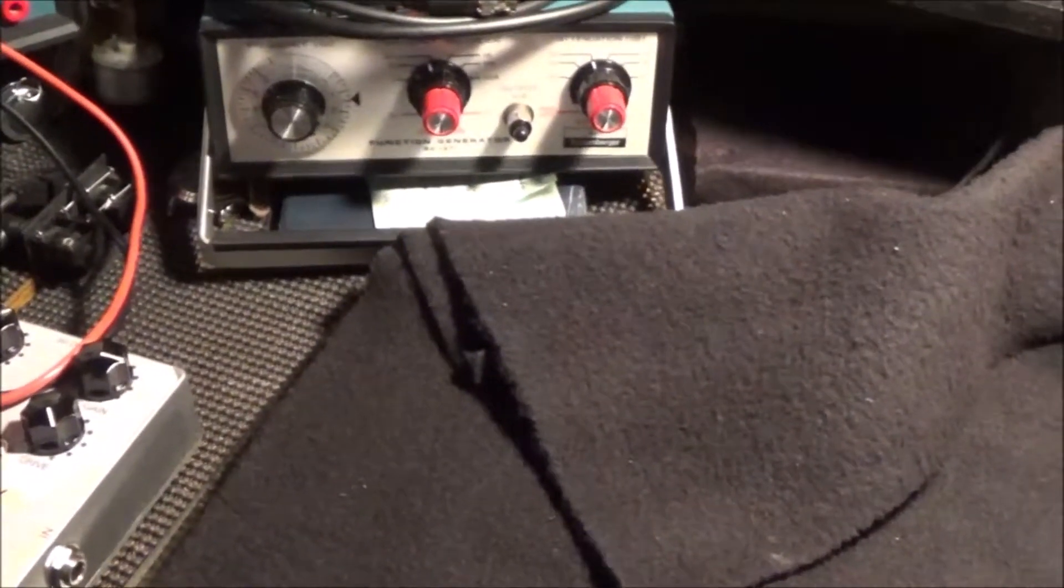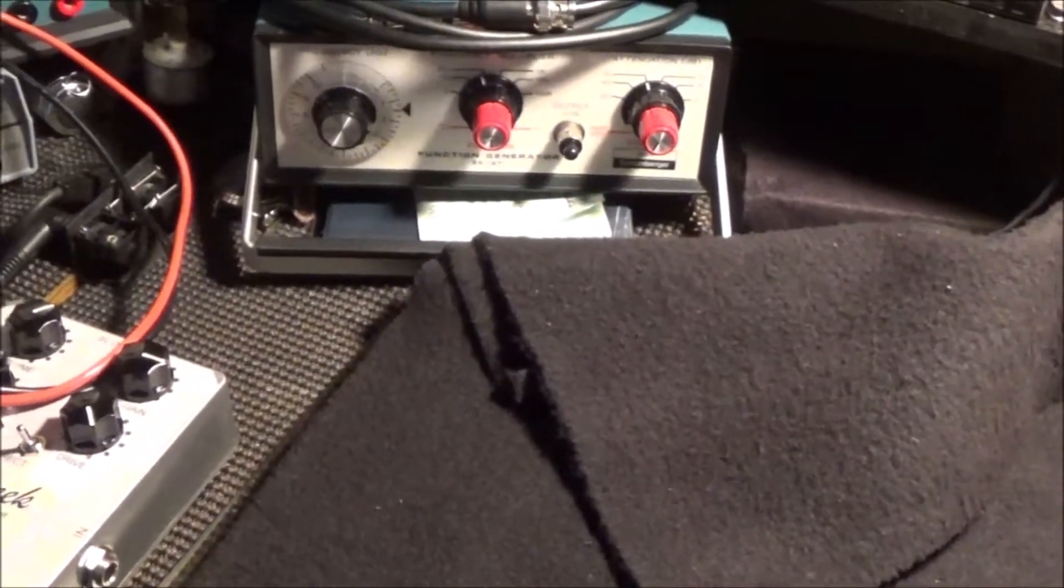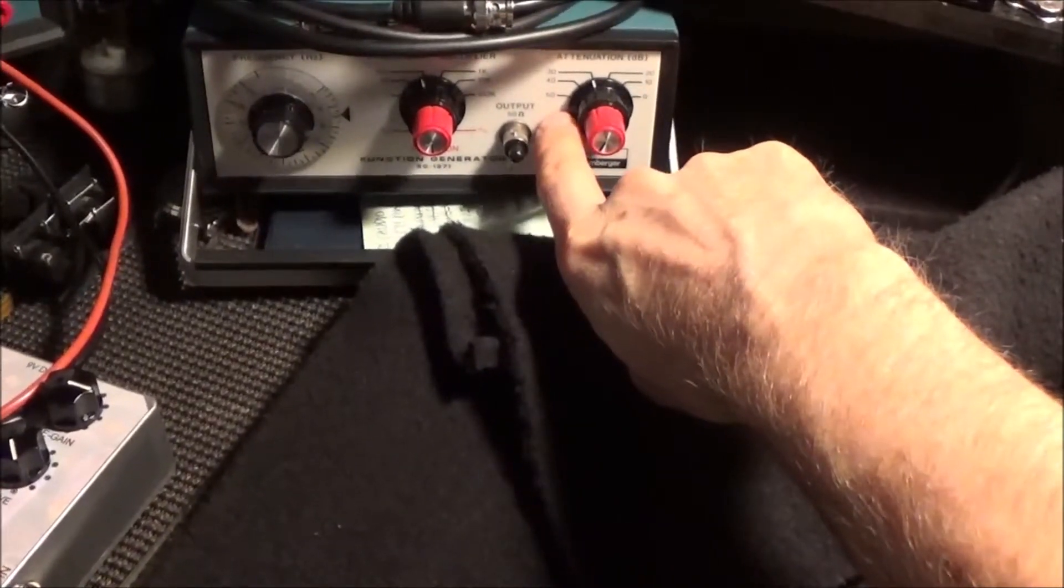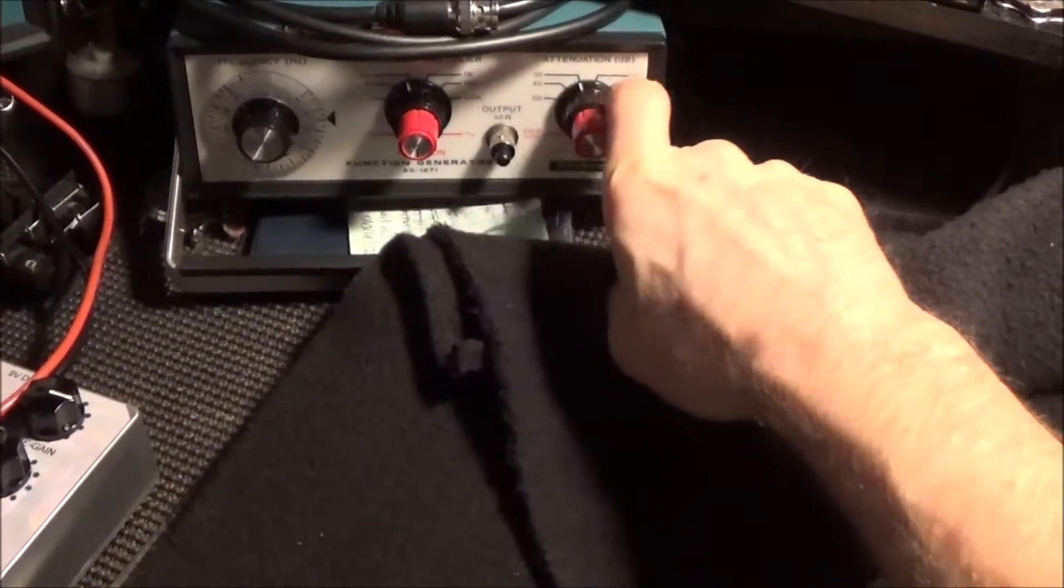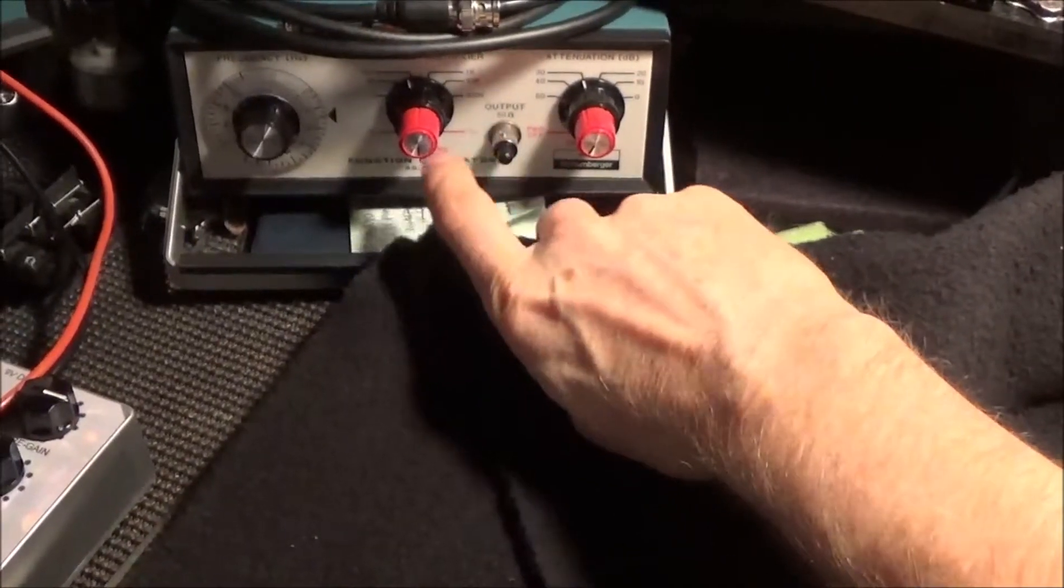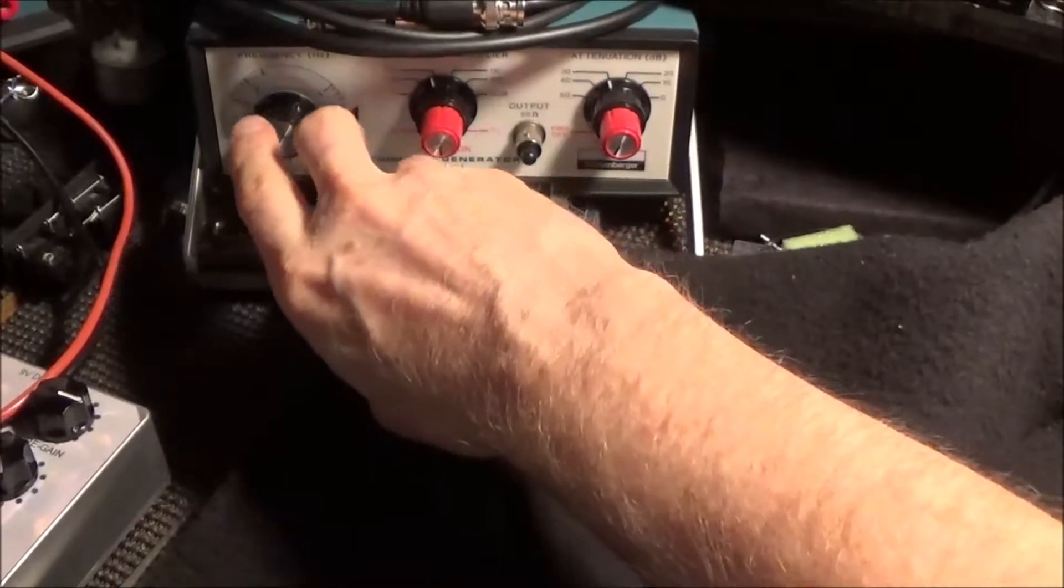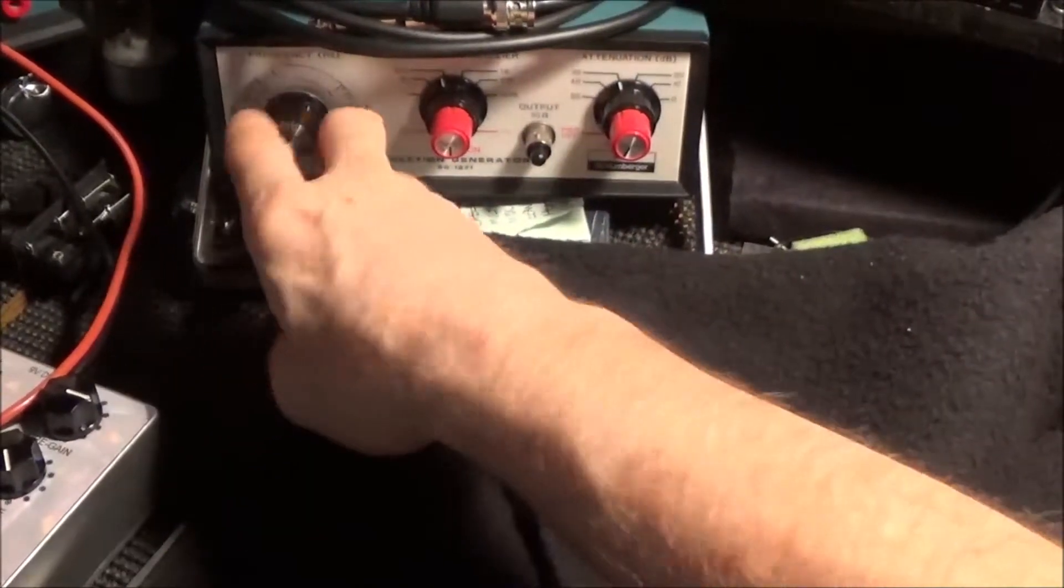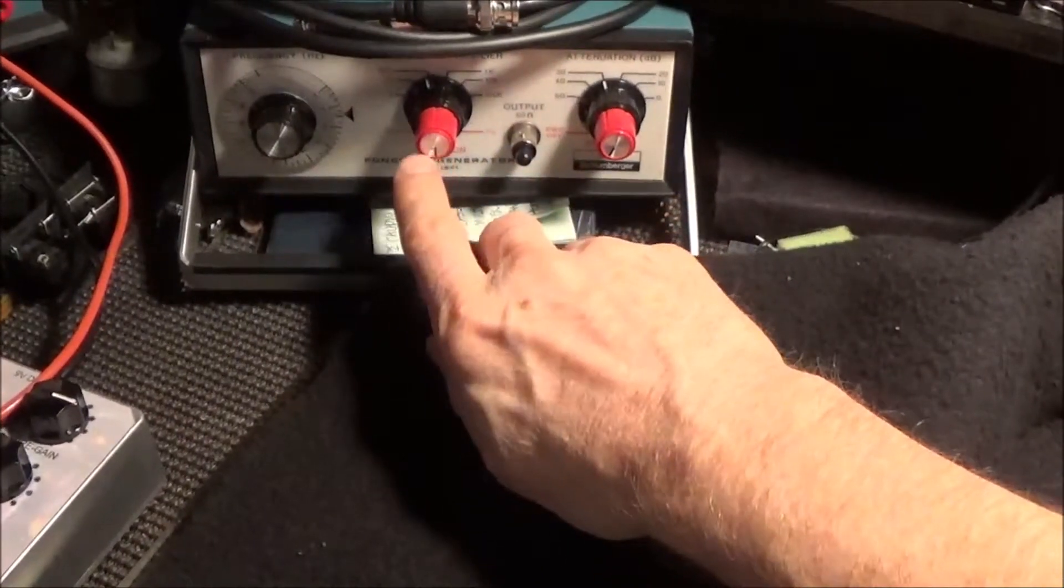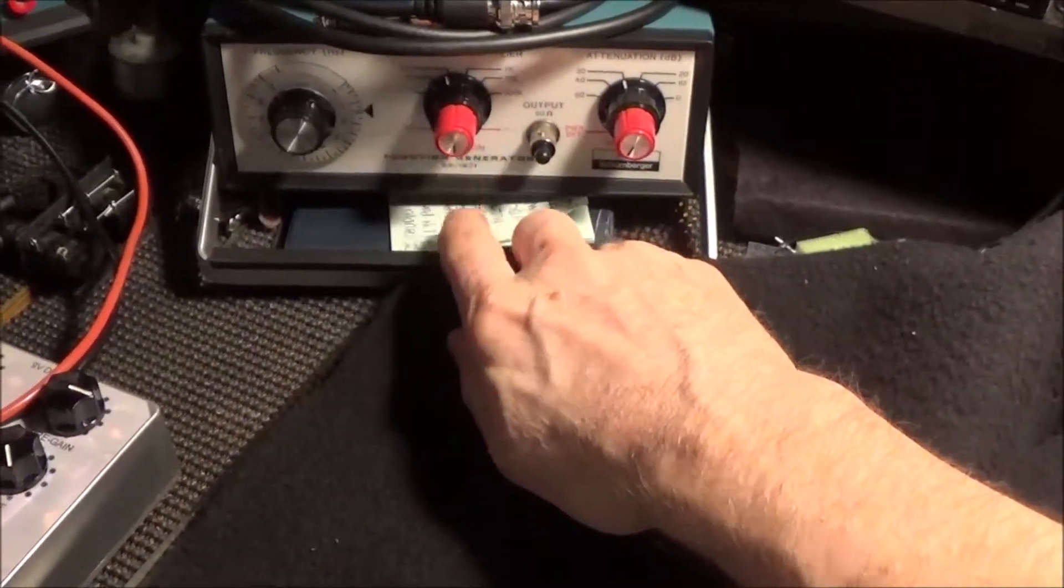Over here is my Heath Schlumberger SG 1271 function generator that I was mentioning earlier. This has attenuation switching going all the way from minus 50 dB to zero. It's got a BNC output, and then you have a frequency range here and you can vary the range of the frequencies with this dial. This one you can get sawtooth, square wave, and sine waves.